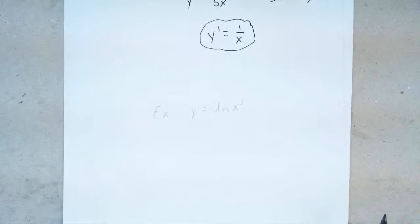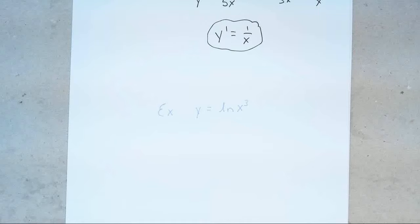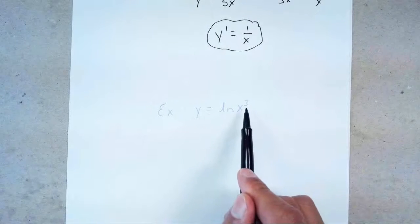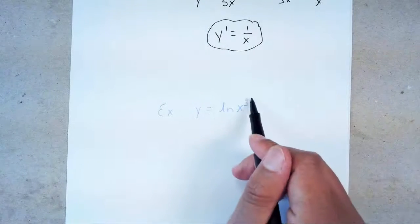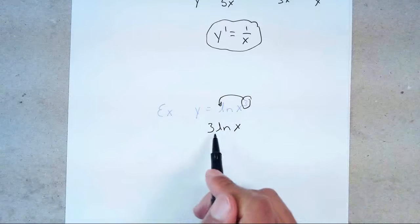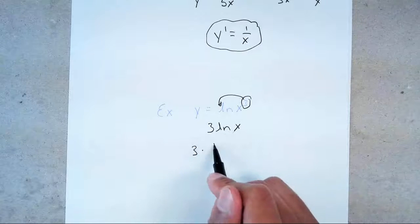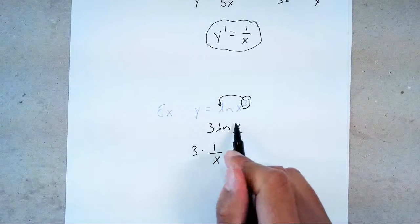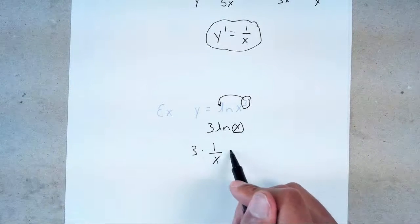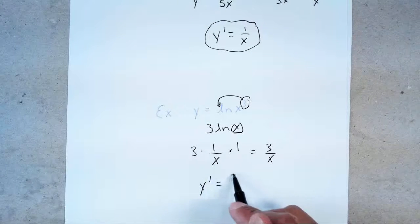Sometimes you have to look for those rules we went over. Anytime you can break terms apart — adding when multiplied, subtracting when divided, bringing an exponent to the front — you want to do that because it makes things easier. If y = ln(x³), I notice the exponent and bring it to the front: 3·ln(x). The 3 is a constant I'll multiply at the end. The derivative of ln(x) is 1/x times the derivative of x, which is 1. Multiply across and y′ = 3/x.